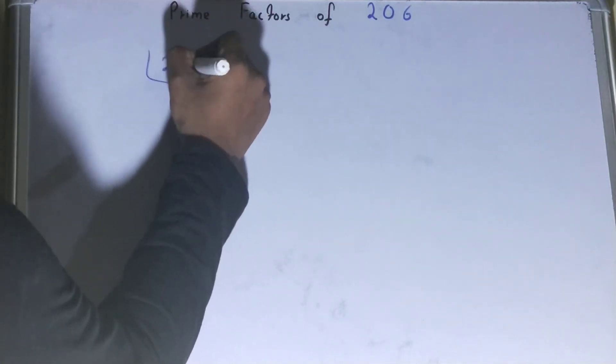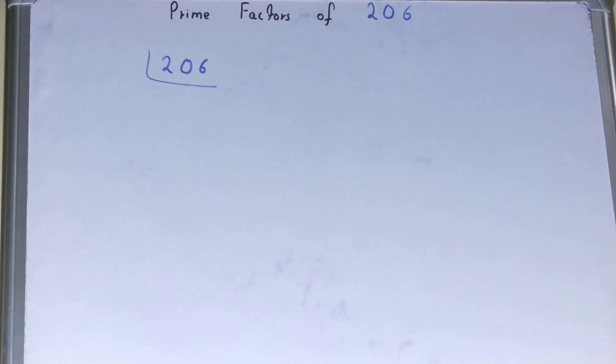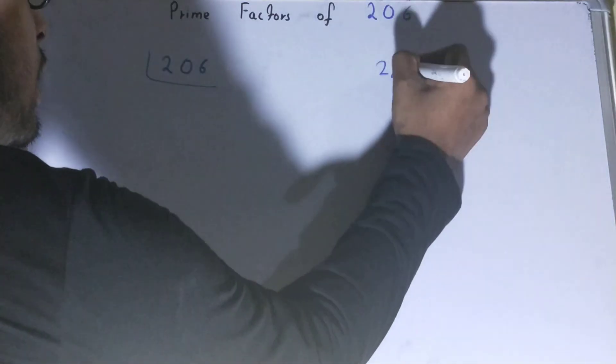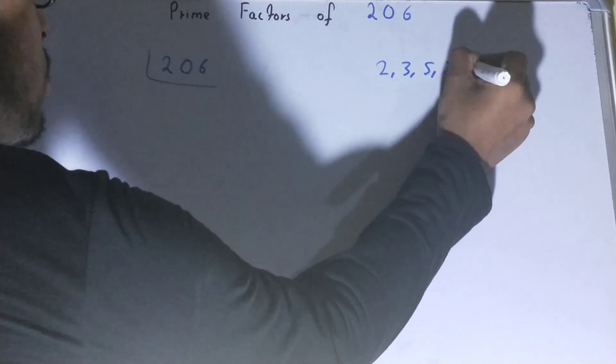And before solving this, you must have an idea about what prime numbers are. Your prime numbers are numbers that are divisible by one and themselves only, like two, three, five, seven, and so on.